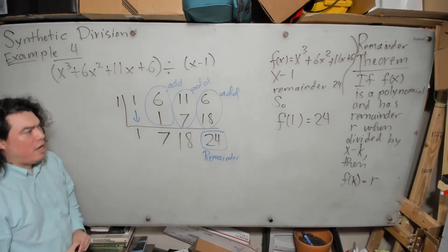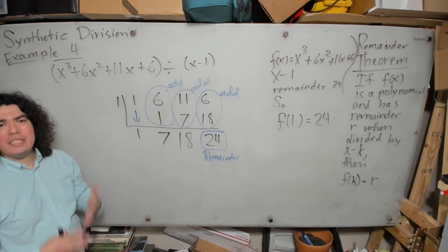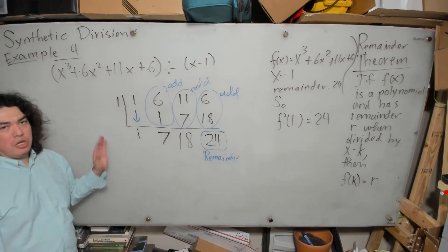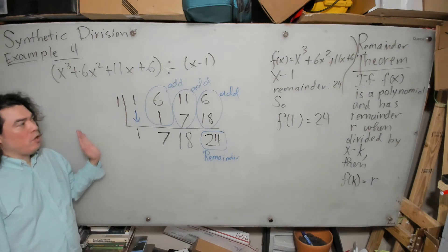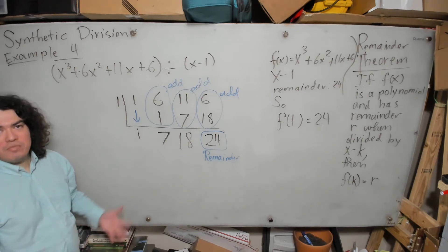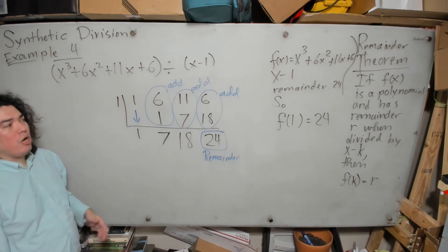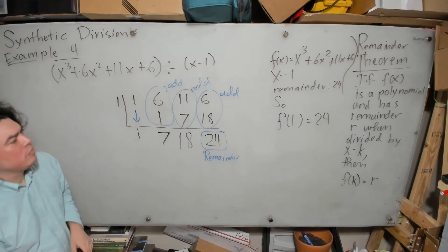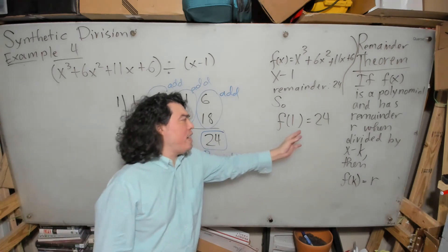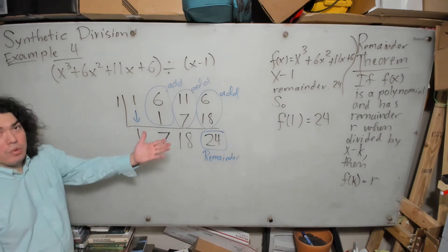As you notice when doing this synthetic division calculation, it's very straightforward — all we had to do was multiply and add. The numbers here have been integers, so it's been very nice to work with. By using the remainder theorem and synthetic division, we were able to evaluate the function at x equals 1.